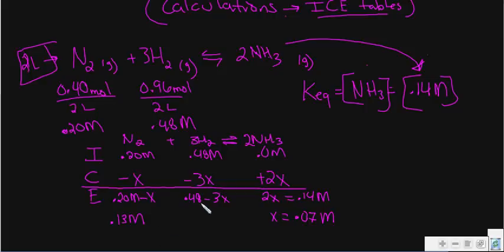And what about 0.48 minus 3X? Well, so that's going to be 0.48 minus 3 times 0.07. And that's going to end us up at 0.27 molar.